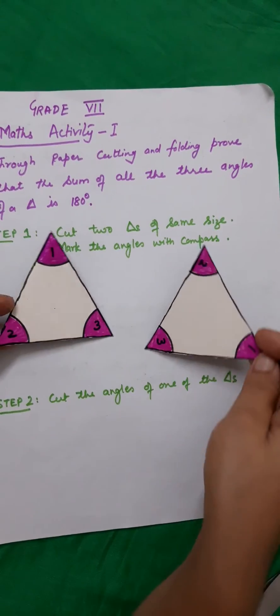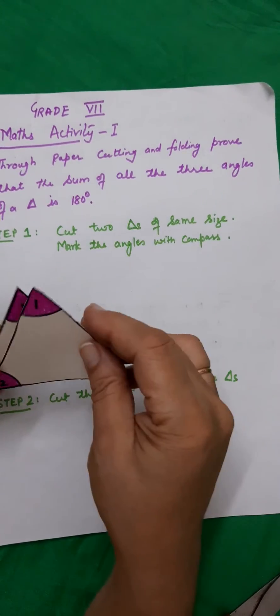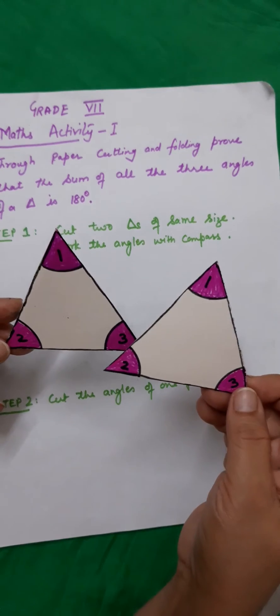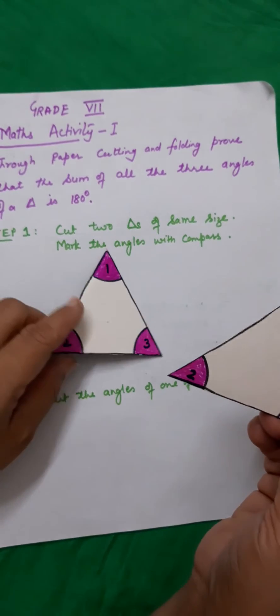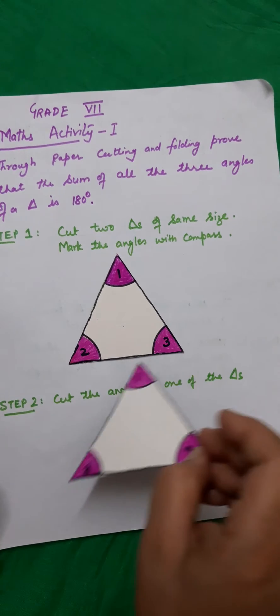I have taken two triangles exactly the same and marked these angles, numbering them 1, 2, and 3. I number them like this. Now I paste it here.